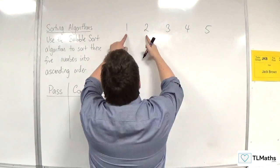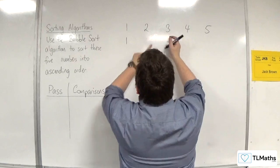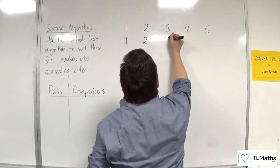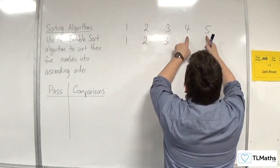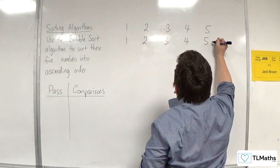So, 1 and 2 get compared. 1 is smaller than 2. Then 2 and 3 get compared. 2 is smaller than 3. 3 and 4 get compared. 3 is smaller than 4. 4 and 5 get compared. 4 is smaller than 5. So 5 gets bubbled to the top.